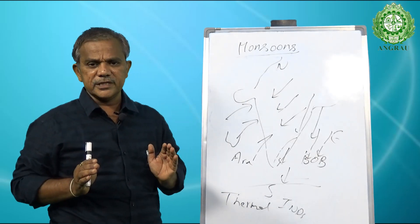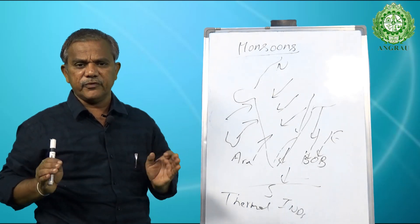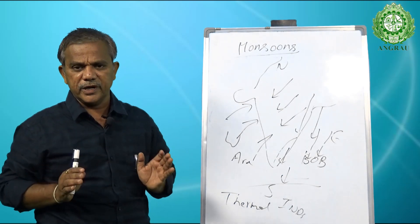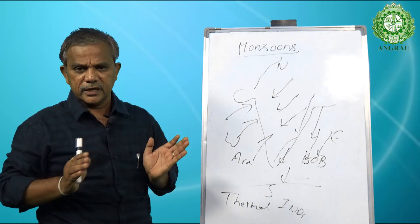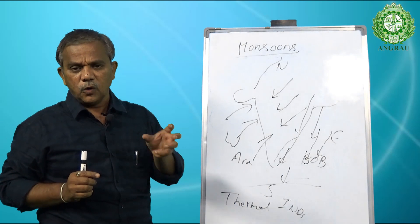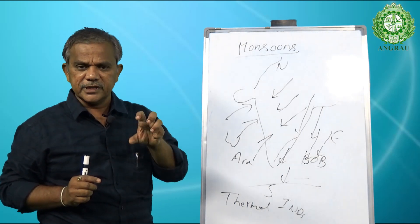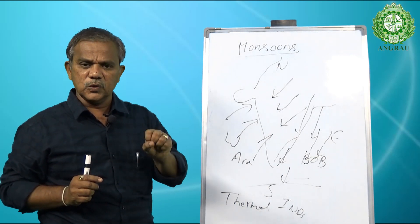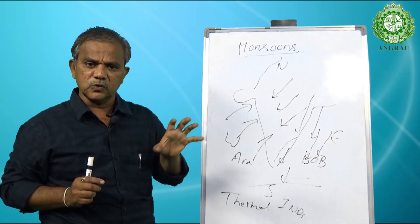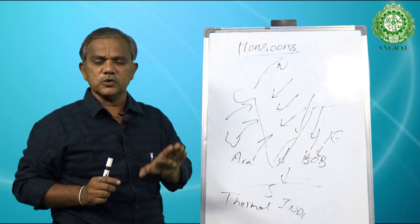On an average, the country receives 1,190 mm of rainfall per decade. Out of this 1,190 mm, 70 percent is received only during the southwest monsoon or monsoon period.